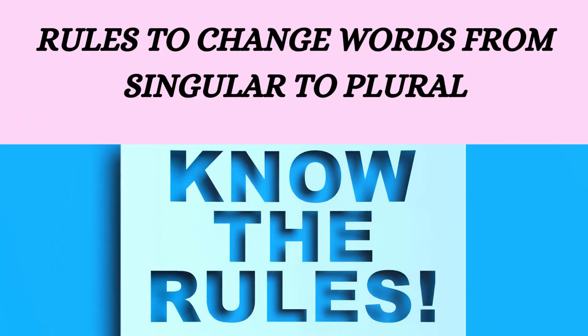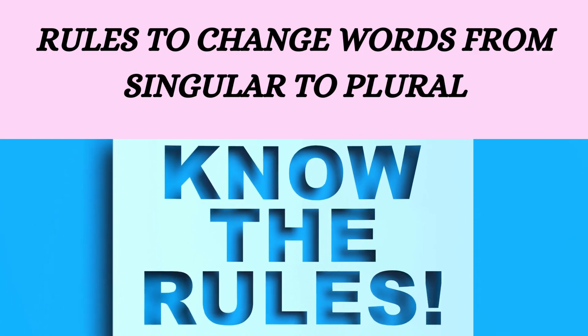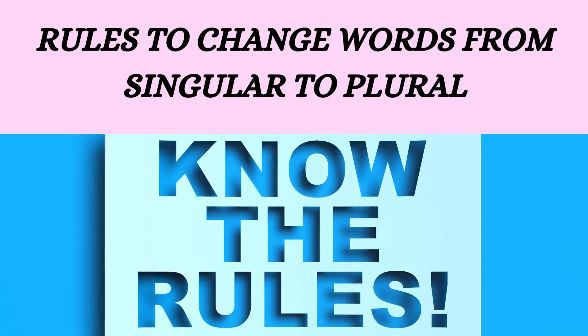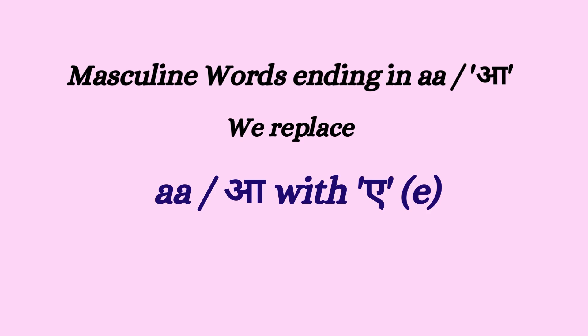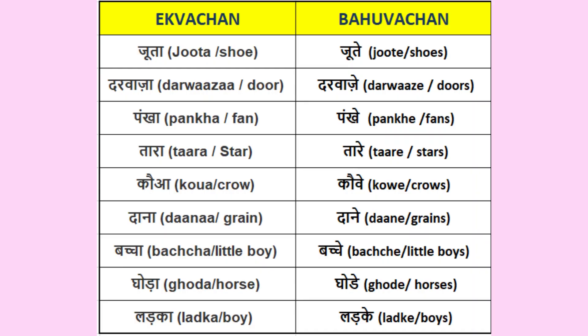Now let's look at some rules which will make it easy to change words from singular to plural. Rule number 1: Every time you have to change a word which is masculine and ends in -aa, you simply remove the -aa and replace it with -e and it becomes plural. For example: joota → joote, darwaza → darwaze, pankha → pankhe, tara → tare, kauwa → kauwe, baccha → bacche, ghoda → ghode, dana → dane, ladka → ladke.